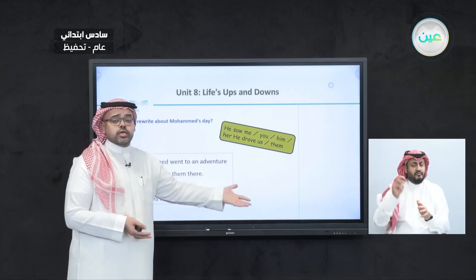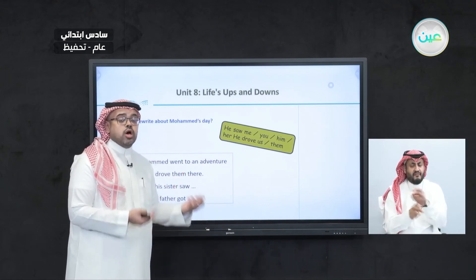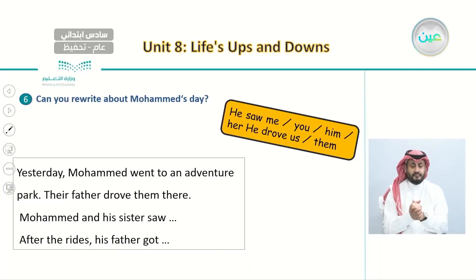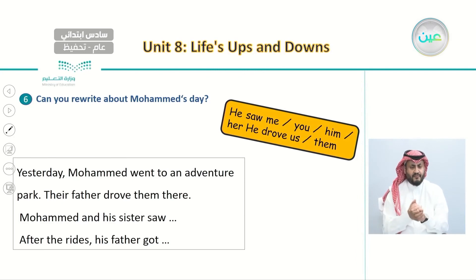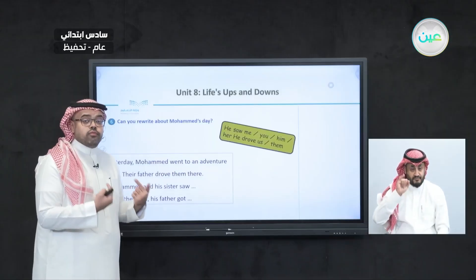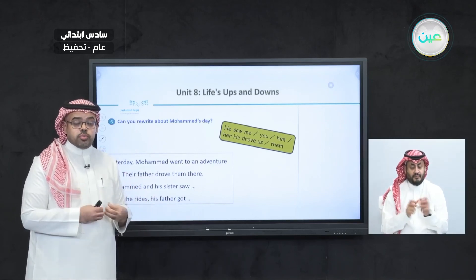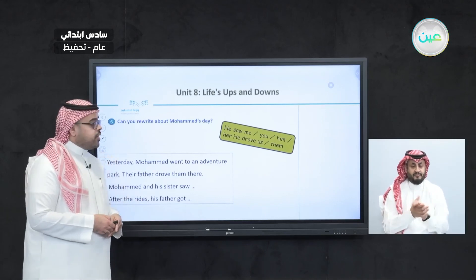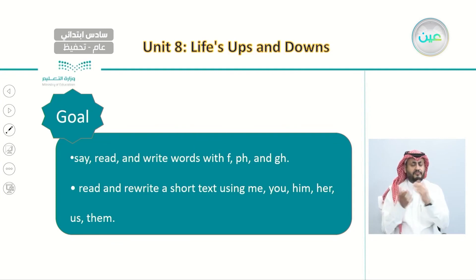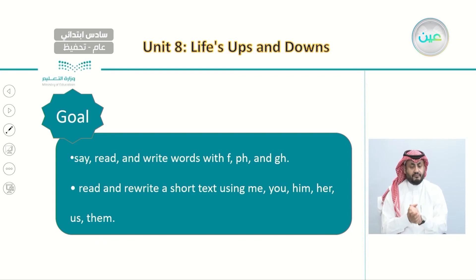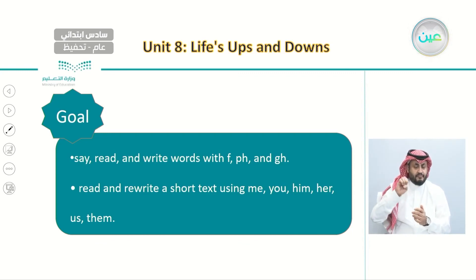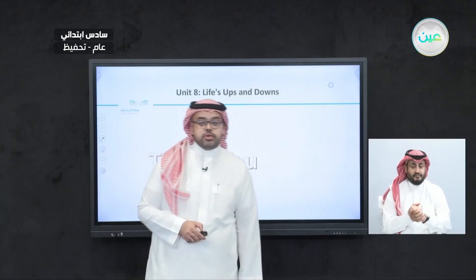Now what we need to do is rewrite Muhammad's story by changing the pronouns using object pronouns. For example, instead of 'he saw me' we use him; instead of 'he drove us' we can say 'he drove them.' So we can rewrite the story about someone we know or about ourselves. At the end of this lesson, you should be able to read and write words with F, PH, and GH, and read and rewrite a short text using me, you, him, her, us, and them. Thank you very much for watching, and I'll see you next time.